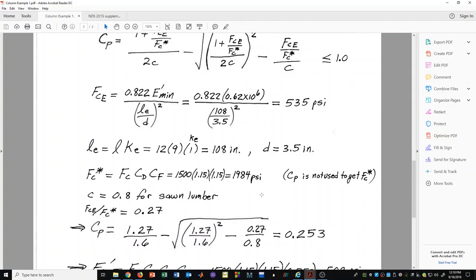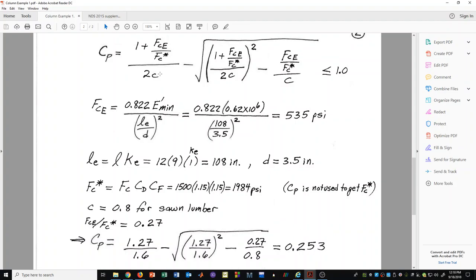The last thing we need is this variable C here. For sawn lumber, that is a constant, it is 0.8. If you were to go and look in the NDS code book and look up the section on column design, you would see that this value of C changes depending on which type of wood member you're designing.